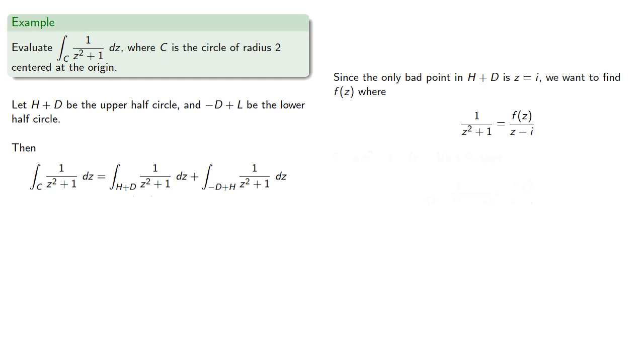Since z squared plus 1 is (z minus i) times (z plus i), we can rewrite, and comparing the two sides gives us f(z). Consequently, this first integral will be 2πi times f(i).